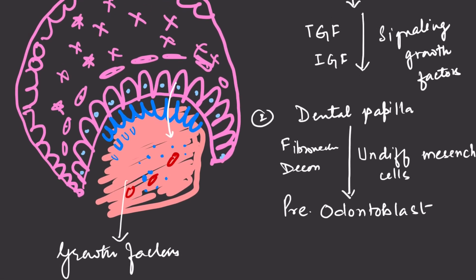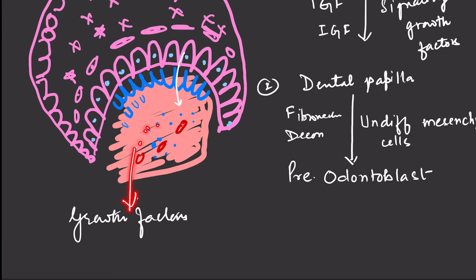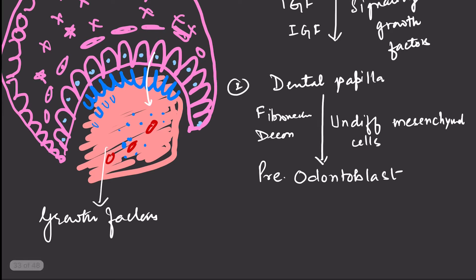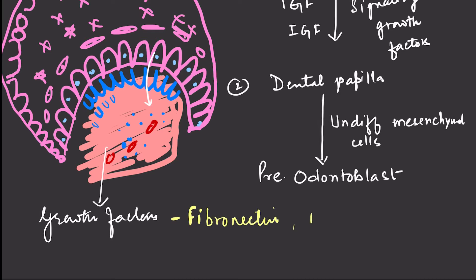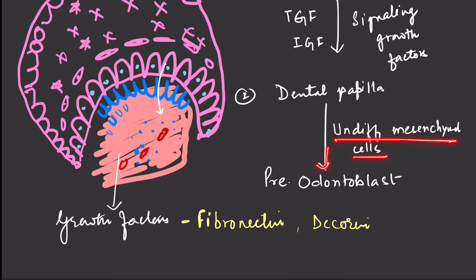Differentiation of odontoblast cells in the dental papilla from undifferentiated mesenchymal cells is driven by certain growth factors released by the dental papilla ground substance. These include fibronectin and decorin, which are signaling molecules that help migration of undifferentiated mesenchymal cells into pre-odontoblast cells. The dental papilla thus helps mesenchymal cells form pre-odontoblasts, which further differentiate into odontoblasts.